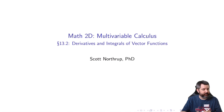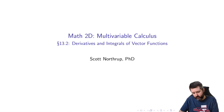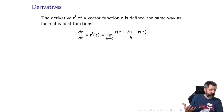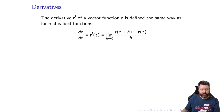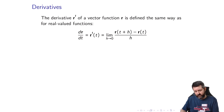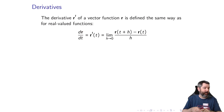We defined the idea of a vector function in 13.1, so now we'll think about how we take the derivative of that. The derivative r'(t) of a vector function r is defined the same way as for real-valued functions. dr/dt, which we also call r'(t), is the limit as h goes to zero of r(t+h) minus r(t) over h. This is identical to how we define the derivative of real-valued functions — the only difference is that r is a vector function.